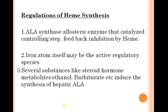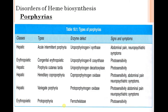Iron itself may be an active regulatory species. Several substances like steroid hormones, ethanol, and barbiturates induce the synthesis of delta-aminolevulinic acid. Various disorders of heme biosynthesis include hepatic and erythropoietic types, related to acute intermittent porphyria, congenital porphyria, hereditary porphyria, variegate porphyria, and protoporphyria.